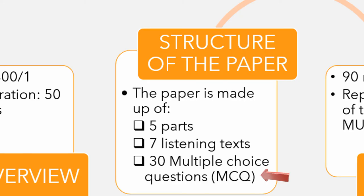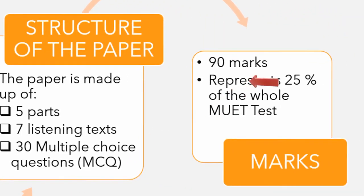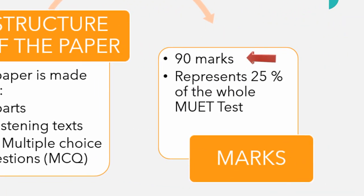You would need to choose one of these answers and transfer your answers onto an OMR paper. The total marks for the listening paper is 90 marks, and this will represent 25% of the whole MUED test. All four papers will have the same weighting of 25% of the overall test, meaning that the MUED listening paper is as important as the rest of the papers you will be sitting for in MUED.